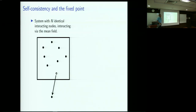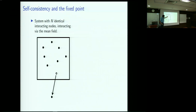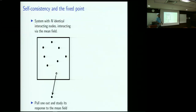So what is the fixed point analysis? We have a system of n identical interacting nodes and they are interacting via the mean field. The idea of the fixed point is essentially to impose a sort of self-consistency requirement. Here are the n particles, then one of them is pulled out, and you study its response to what is called the mean field, and then come up with a self-consistency equation.